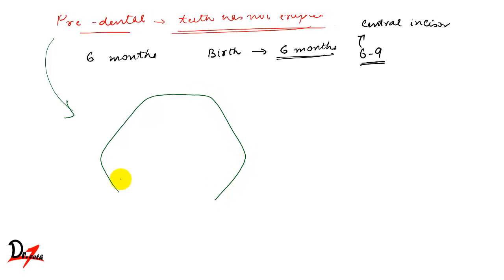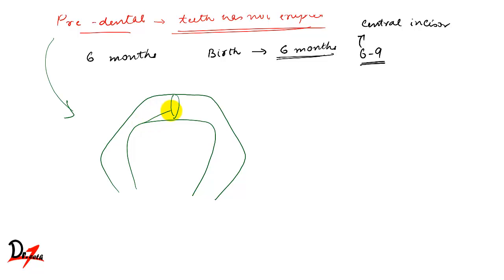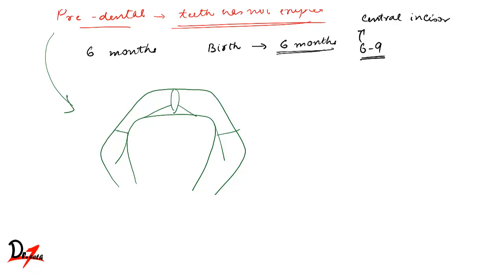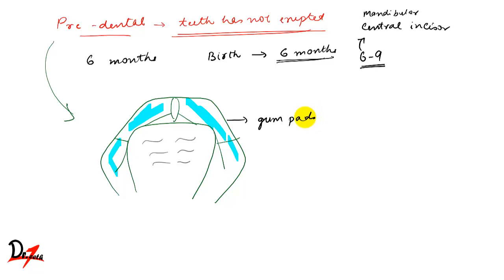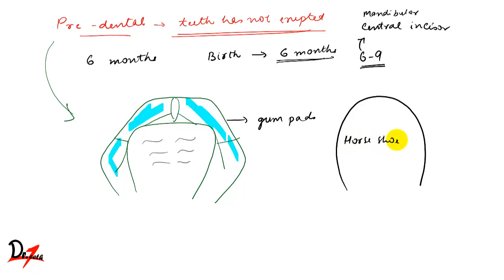The child will have a gum pad. The alveolar process at the time of birth is known as the gum pad. Gum pads are pink in color and covered by a dense layer of fibrous periosteum. They are horseshoe shaped, and each gum pad has a labio-buccal portion and a lingual portion.